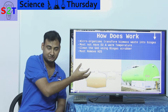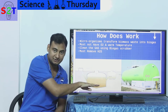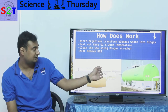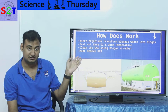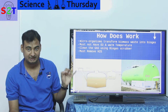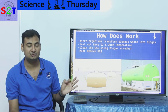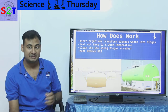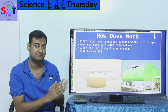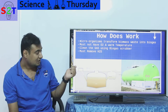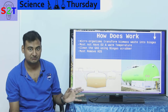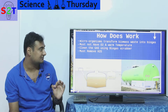Once sealed, decomposition produces methane, and the pressure building up pushes material down to a second output tank where you collect your fertilizer. You must ensure the system is properly sealed — if oxygen leaks in even little by little, it will reduce your methane output. For that reason, we generally either bury the digester or seal it with water.